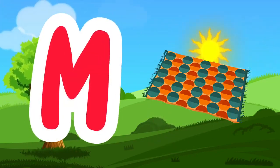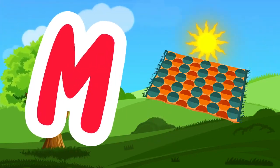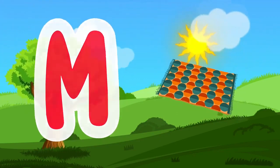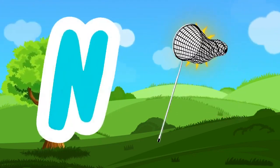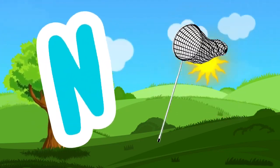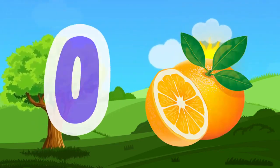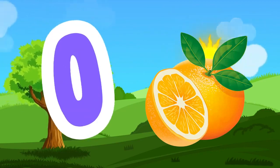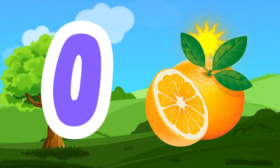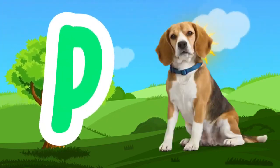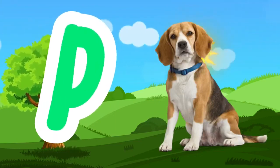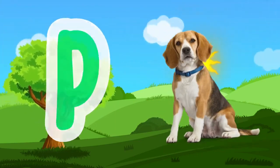M is for Mat, M-M-Mat. N is for Net, N-N-Net. O is for Orange, O-O-Orange. P is for Pet, P-P-Pet.